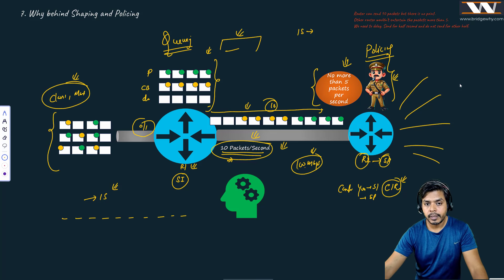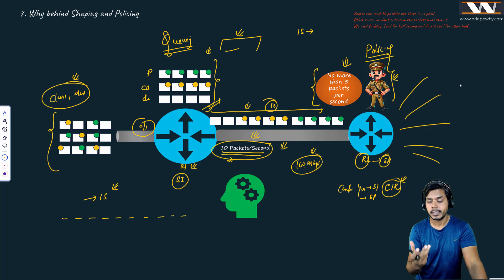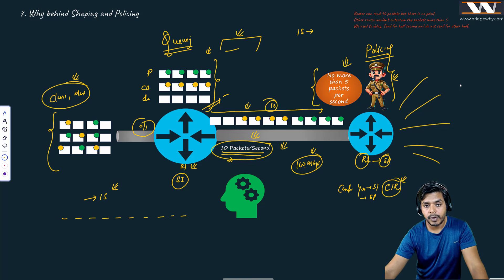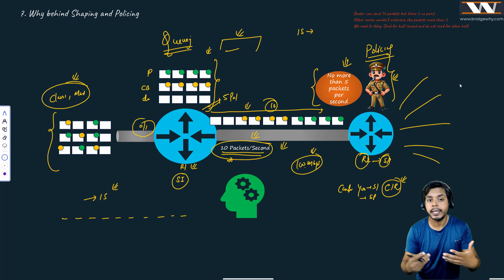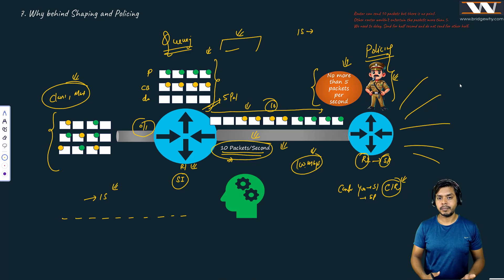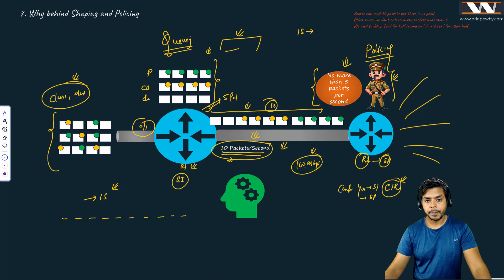So what I am doing here: I have the capacity to send 10 packets per second — this is my interface bandwidth — but I cannot use that fully because policing is configured at the other side. That router checks how many messages I send in one second; if it is more than five it discards them. That is why I will be sending five packets per second, meaning I need to deliberately delay my packets — send for some time, then not send for some time — because my speed is 10 packets per second.